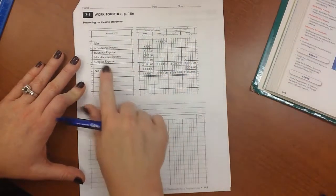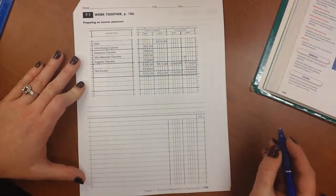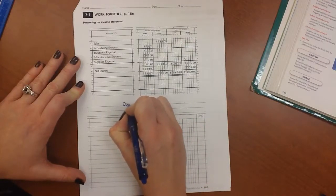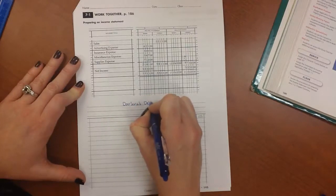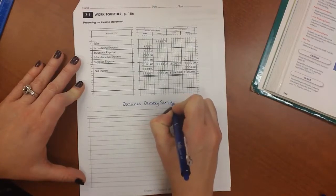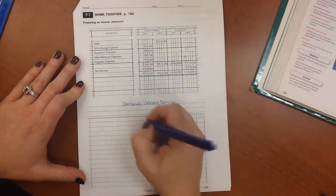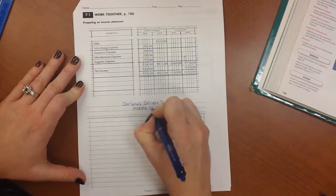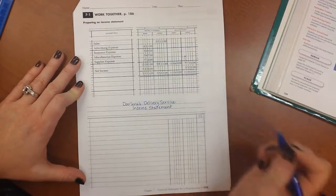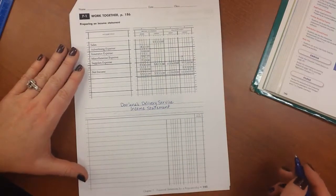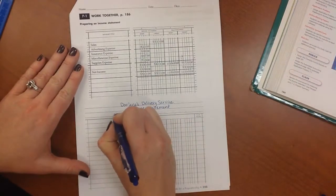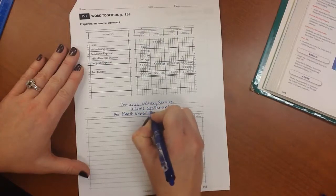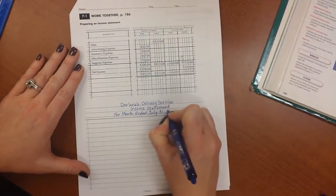We are given part of our worksheet here. We have the income statement and balance sheet columns that we are going to use to create this. We begin by filling out the heading and we put the company name first, which was Darlene's Delivery Service. Next we put the name of the document. And this is our income statement, so we write that in. Next we put in the date and the date on this is July 31st of the current year, so we put in for month ended and then we put in the current month and date and year.